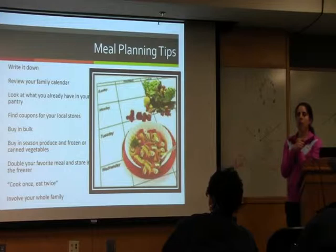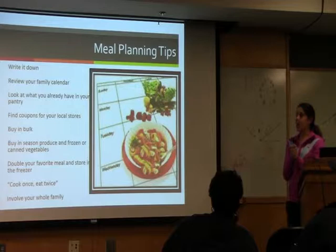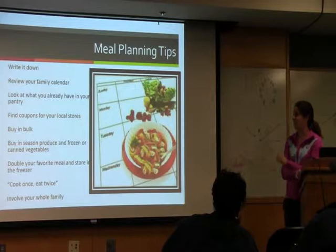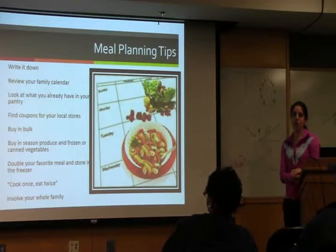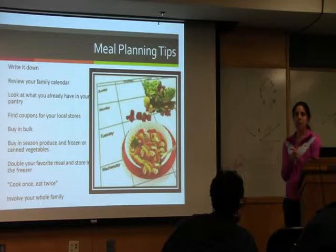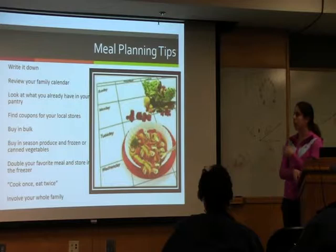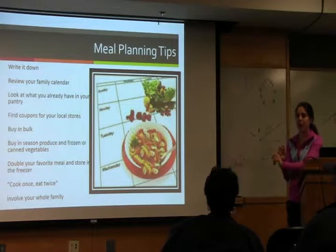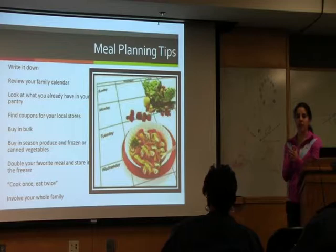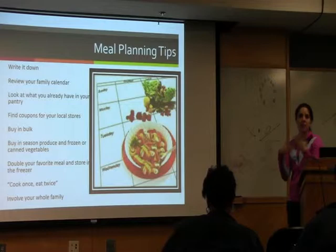Buy produce that's in season — that's normally cheaper because there's a lot more of it. If something's not in season, it might be cheaper to buy it frozen or canned instead. Another tip is to double a meal that you cook and put one in your freezer — if you make lasagna, it might not be a lot of extra time to make two and put one in your freezer. And cook once, eat twice: if you bought a chicken and only ate half, you can keep the rest and make soup or chicken salad with some mayonnaise — a whole other meal.